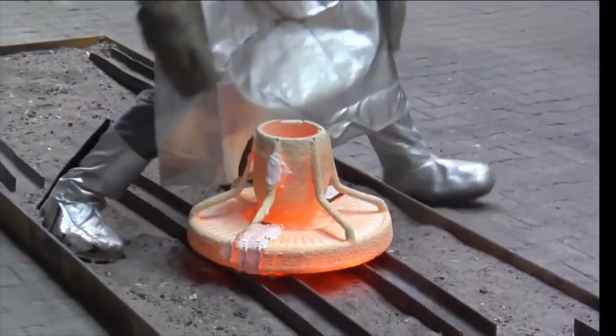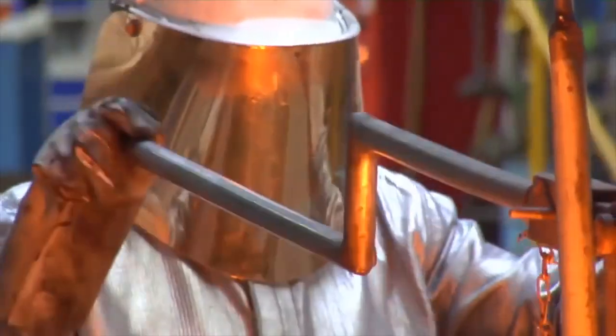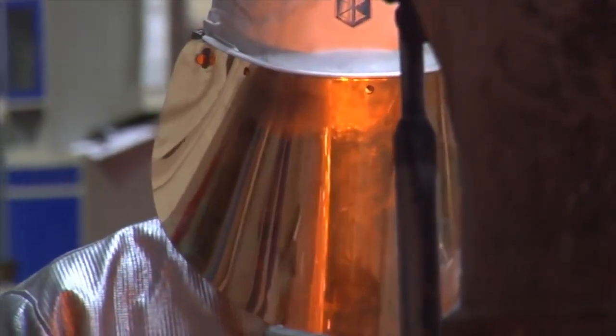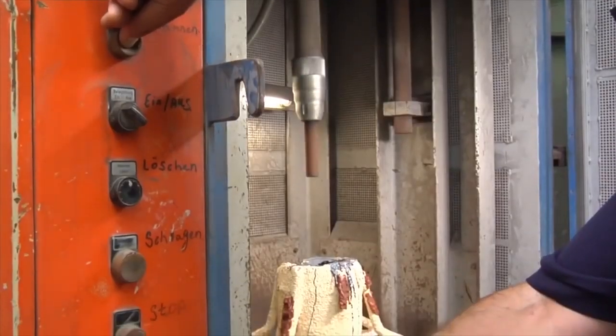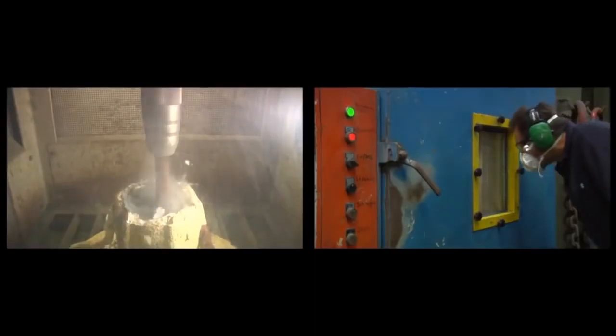Now the liquid steel, which is around 1600 degrees Celsius, can be poured into the heated casting dies. The castings are removed once the molds have cooled.